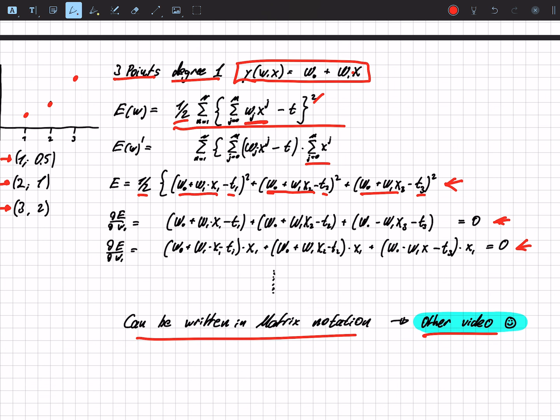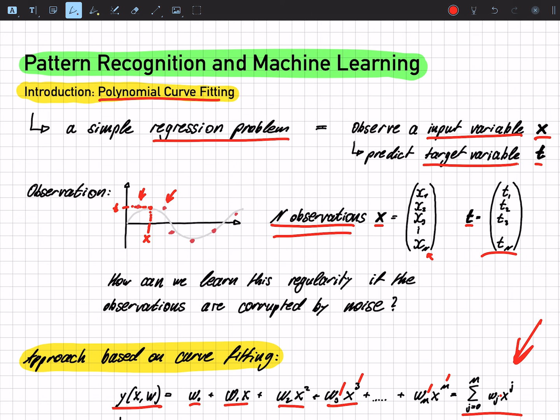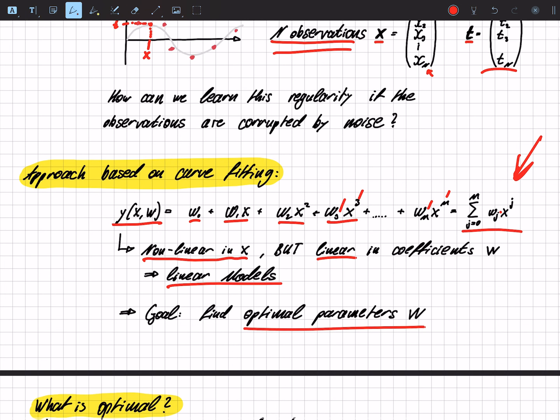So just to summarize, in polynomial curve fitting, we try to create a function that fits the data as close as possible. We have the observations x and we have our targets t. We do this by an approach of polynomial curve fitting, so we define a polynomial that we will adapt as much as possible to fit the data as close as possible.